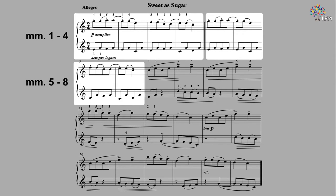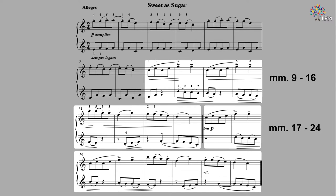Measures one through four and measures five through eight are exactly the same. Measures nine through sixteen and measures seventeen through twenty-four are also the same. Knowing what repeats will reduce the amount of time we spend on practicing the same thing.